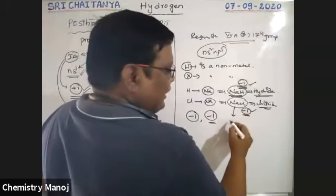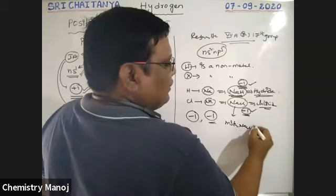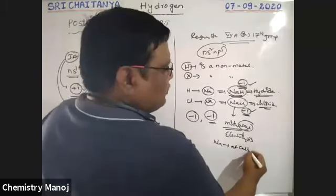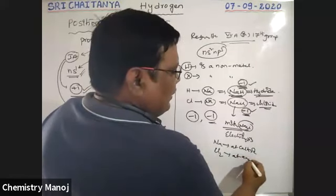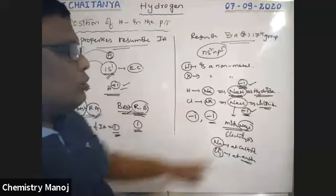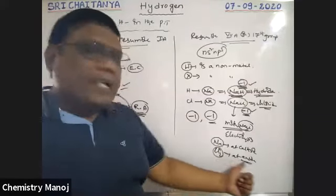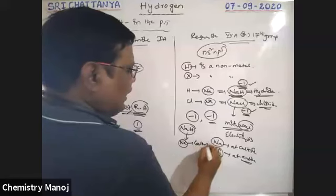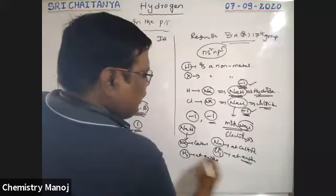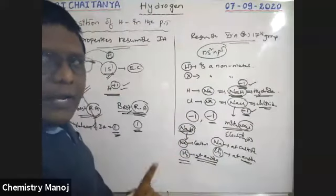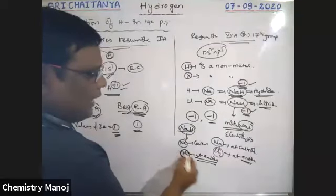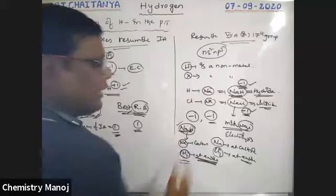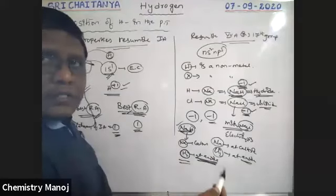When molten NaCl is electrolyzed, sodium metal is liberated at the cathode and chlorine gas at the anode. Similarly, when current is passed through NaH (sodium hydride), sodium is produced at the cathode and hydrogen gas at the anode — just like chlorine at the anode. This resembles the halogen concept. Also, the ionization enthalpy of hydrogen is very high and is equal to the ionization energy of halogens — this also resembles halogens.